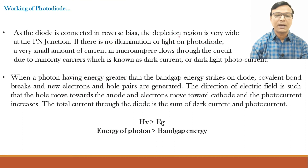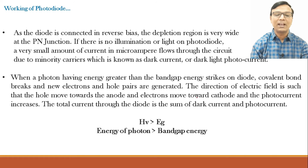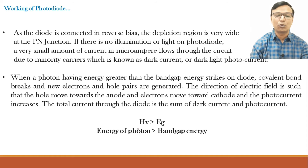As the diode is connected in reverse bias, the depletion region is very wide at the p-n junction. If there is no illumination or light on the photodiode, a very small amount of current in the microampere range flows through the circuit due to minority carriers, which is known as dark current. When a photon having energy greater than the band gap energy strikes the diode, a covalent bond breaks and new electron-hole pairs are generated. The hole moves towards the anode and the electron moves towards the cathode, and the photocurrent increases. The total current is the sum of dark current and photocurrent. The energy of the photon hν must be greater than the band gap energy EG for electron-hole pair generation.